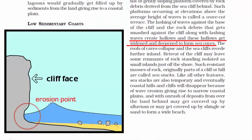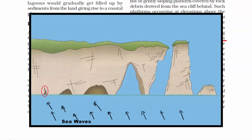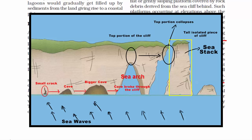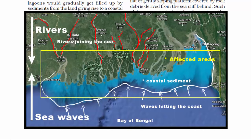Waves constantly hit the foot of the cliff with immense power, and the rock debris there also gets smashed against the cliff. This constant process creates a crack in the cliff, which then becomes larger and forms a cave. Then the roof of the cave collapses, bringing the top portion of the cliff down. This process isolates a tall stack of rock, also called a sea stack. Sea stacks are also temporary — they will disappear. Coastal hills and cliffs will all disappear due to wave erosion, giving rise to narrow coastal plains, and rivers will carry alluvial deposits which get deposited at the coast, eroding big cliffs into coastal plains to form a beach.